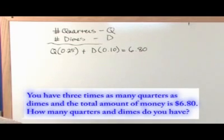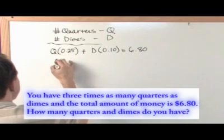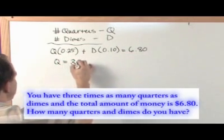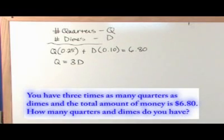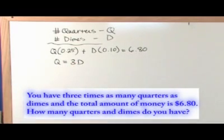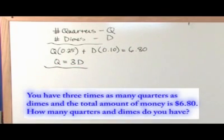Equation number two says you have three times as many quarters as dimes. And to write that down, what it really is saying is the number of quarters you have is three times the number of dimes you have. So you have three times as many quarters as dimes, so you'll have more quarters than dimes by a factor of three. Okay, so here's our two equations: quarters, dimes, and our two unknowns.